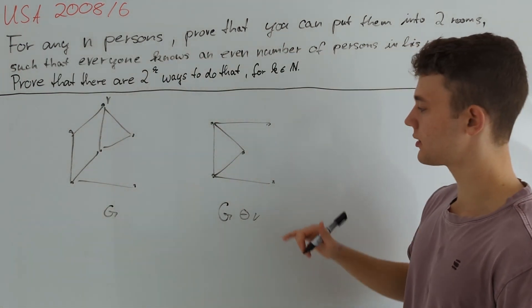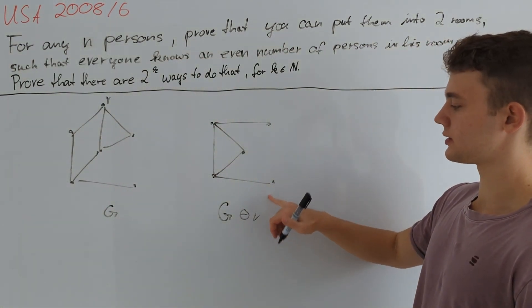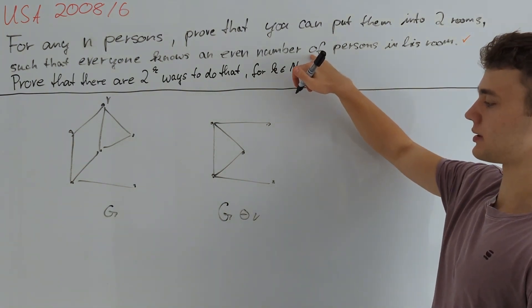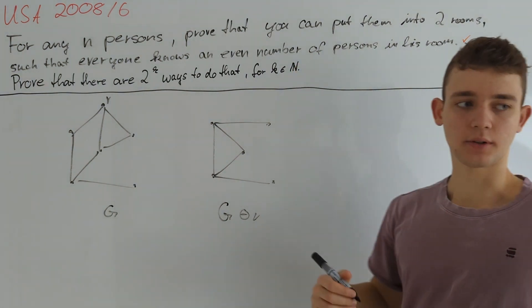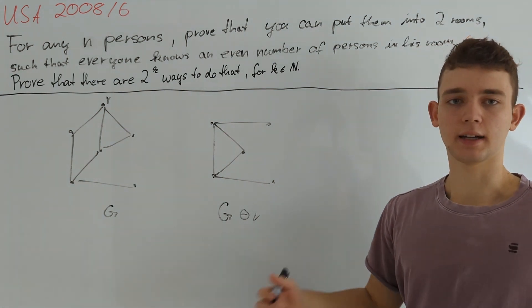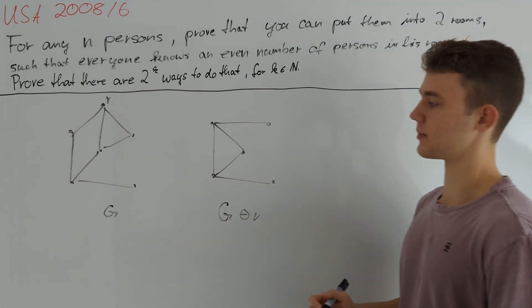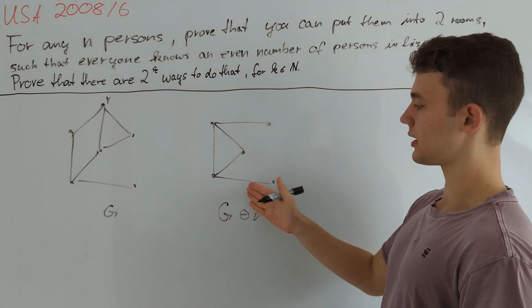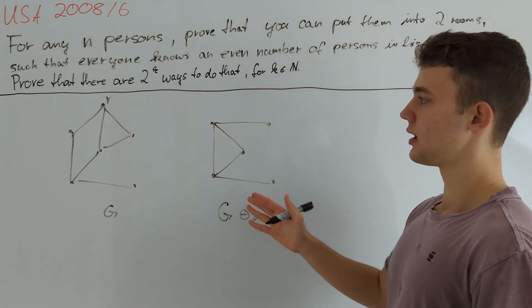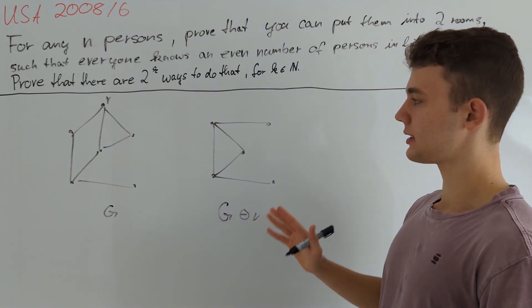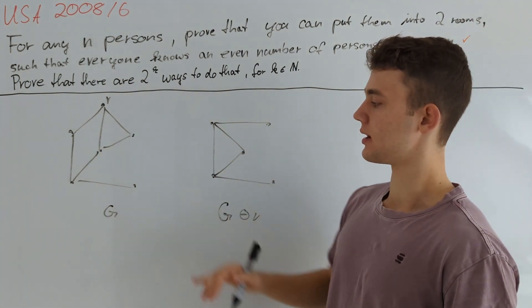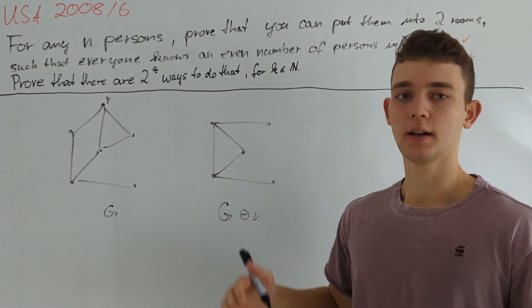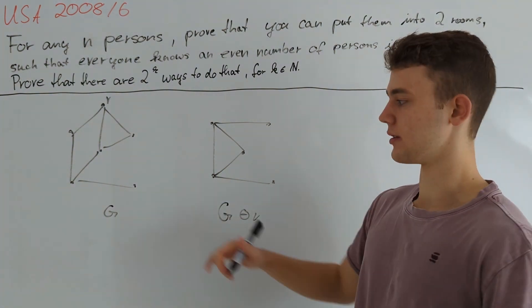So we get those two new edges and remove that one. And what we did there is to take a look at any partition of the vertices in G minus V that obeys this property given in the problem. I am going to call those partitions nice partitions or configurations from now on. And we were actually able to show that if we start from such a configuration we can put V into that set where it has an even number of neighbors and then revert this operation to get a nice configuration in the original graph G.